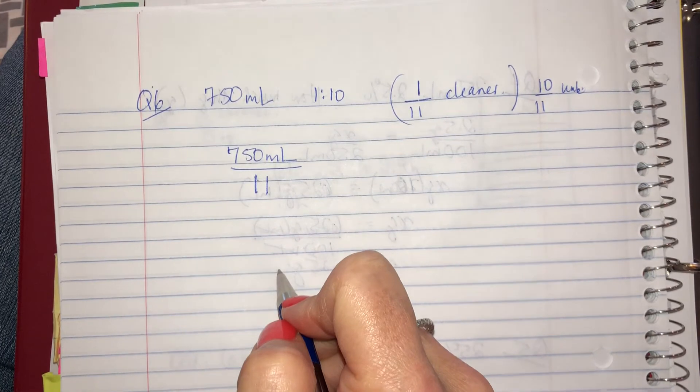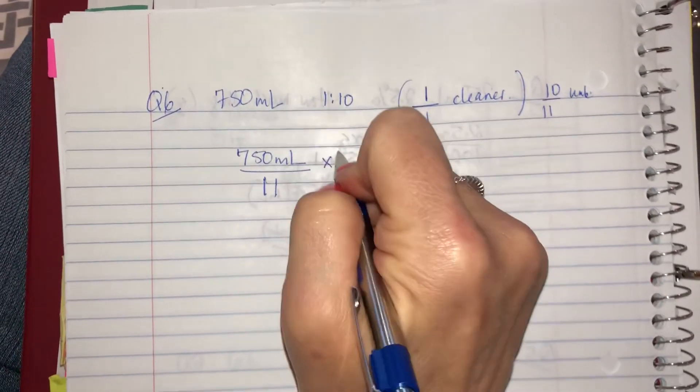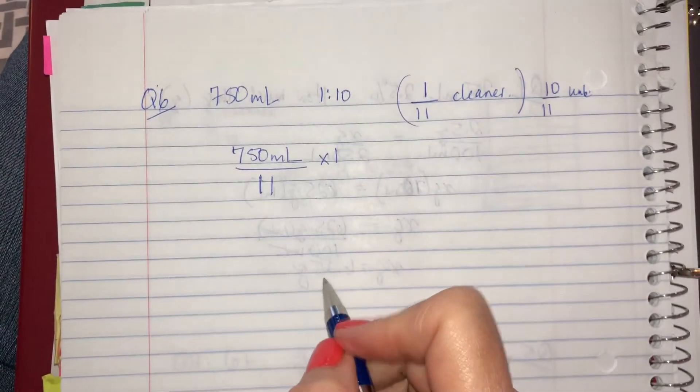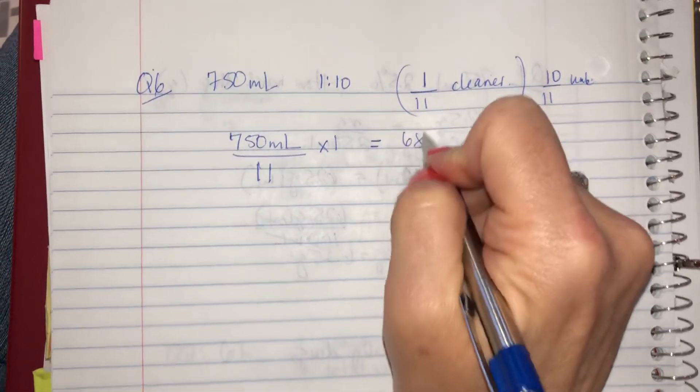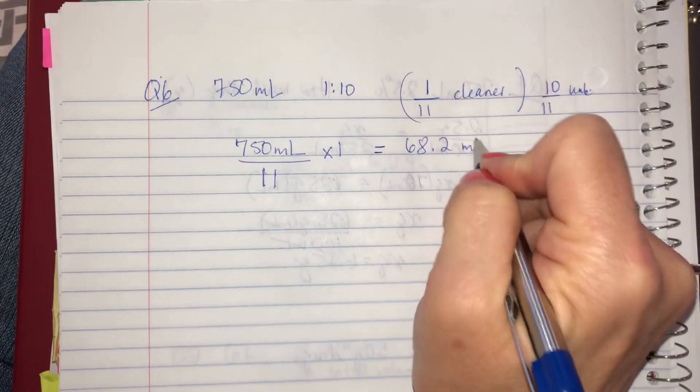Right? And I only need one of those parts for my dilution. The answer is 68.2 mils.